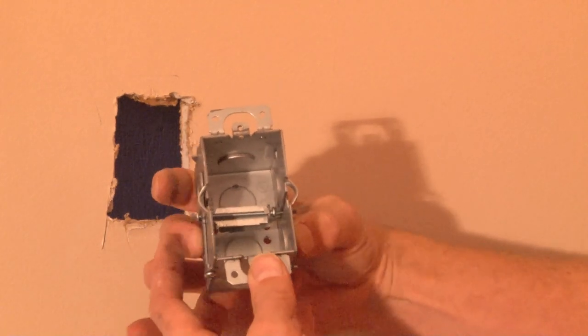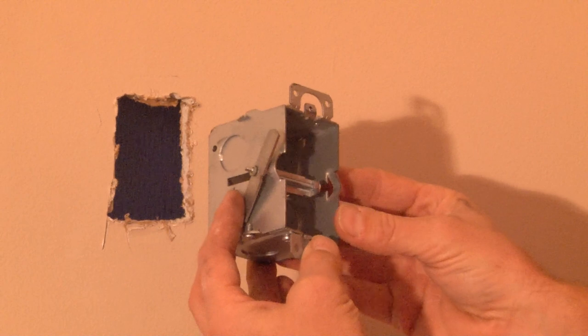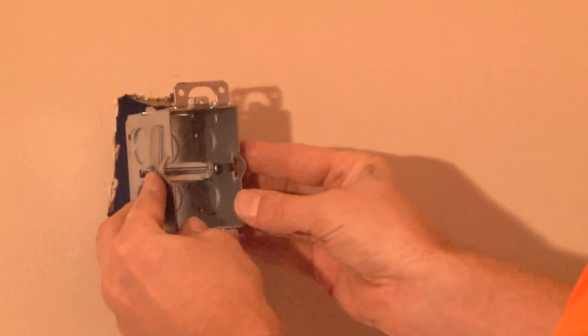These wings then fold out after you pull the conduit and cable through the wall.